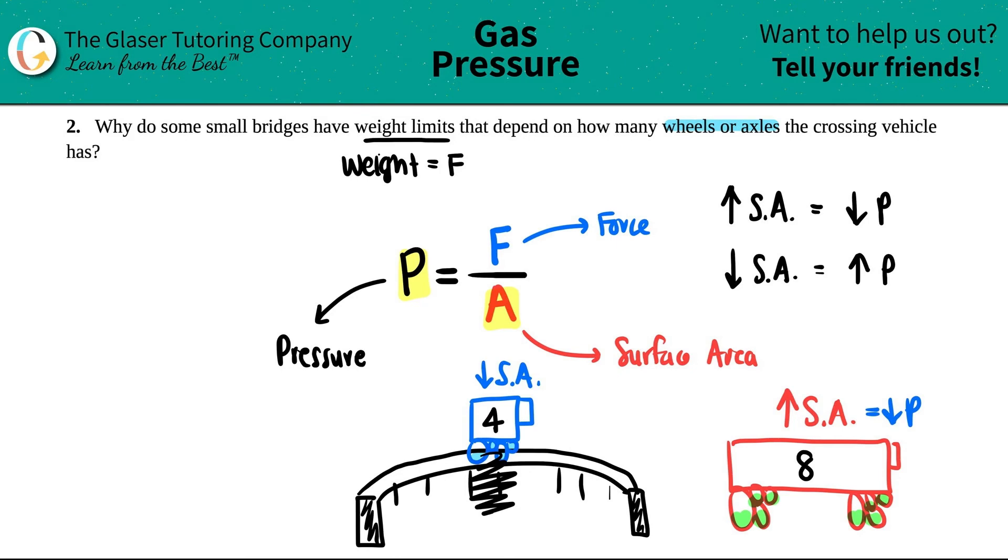And that's because it's exerting out a higher pressure than the longer truck. So that's why some small bridges have weight limits that depend on how many wheels or axles the crossing vehicle has, because if that truck doesn't have a high surface area, it's going to exert a lot of pressure, and sometimes the bridge might not be able to take it.